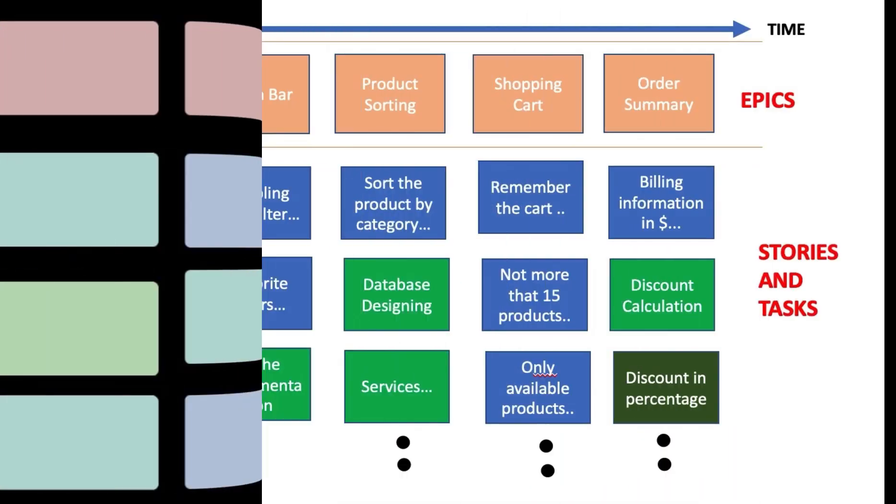Hence, a matrix view was required which could actually show the activities along with their priority. And this is where user story mapping entered.